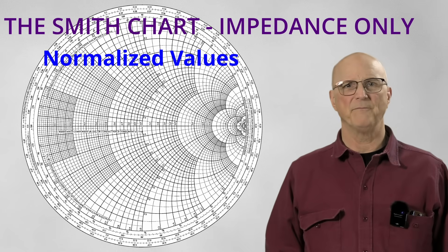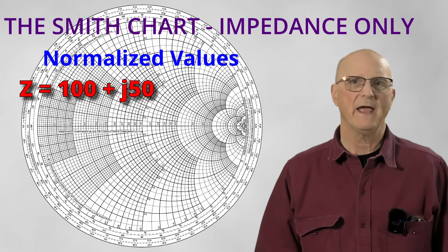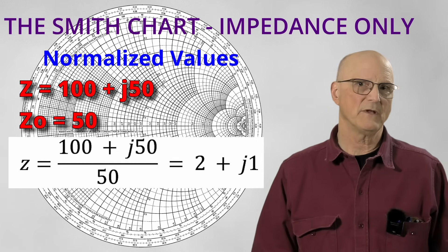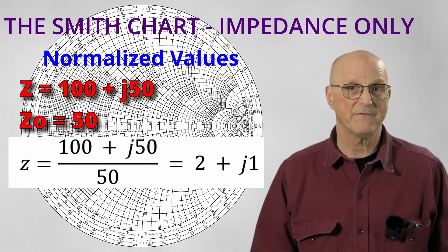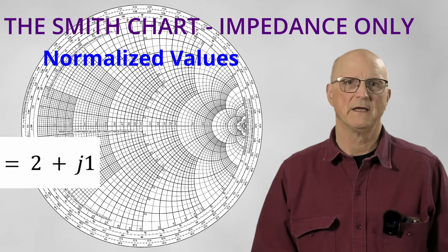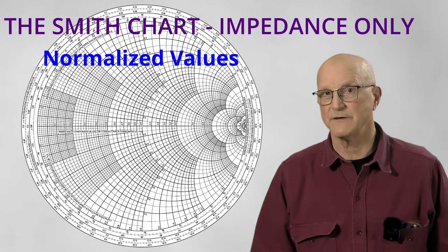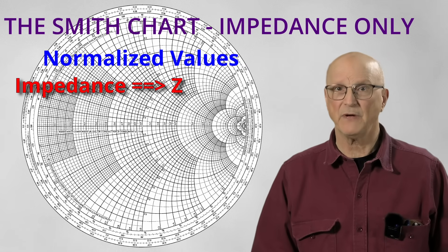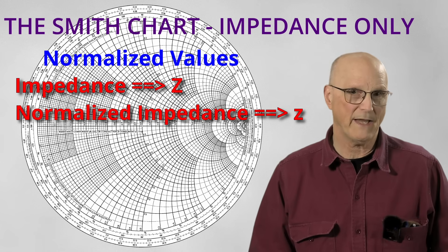This is where we divide the impedance value by the characteristic system impedance, most often 50 ohms. Now for what we're doing here, it actually doesn't matter what value we choose. Well, let me give you an example. We have an impedance of 100 plus J50 and a system impedance of 50 ohms. This gives us a normalized impedance of 100 plus J50 divided by 50, which comes out to be 2 plus J1.